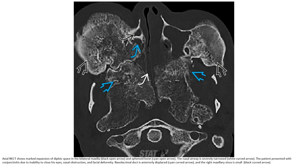This is the non-enhanced CT showing marked expansion of the diploe space in the bilateral maxilla and sphenoid bone. The nasal airway is severely narrowed. The patient presented with conjunctivitis due to inability to close his eye, nasal obstruction, and facial deformity. The nasolacrimal duct is anteriorly displaced, and the right maxillary sinus is small.